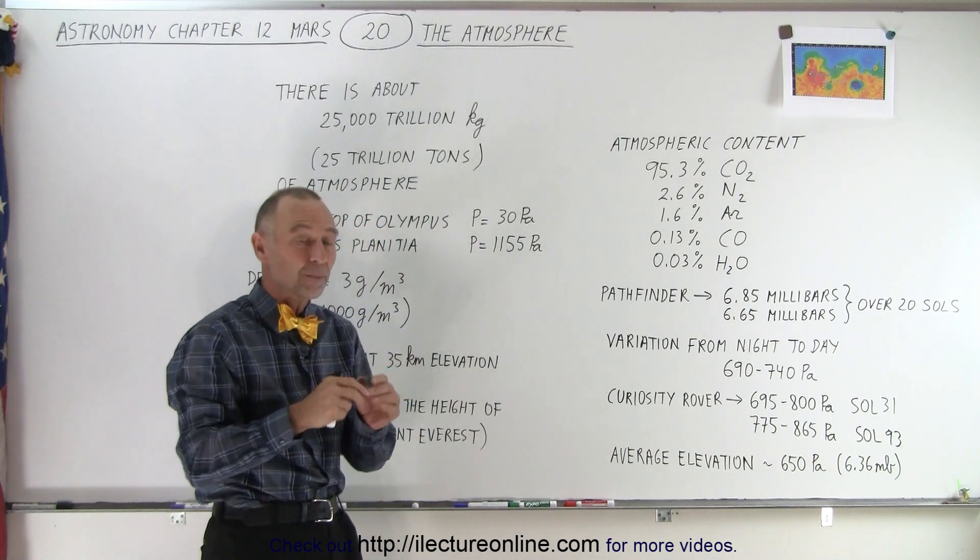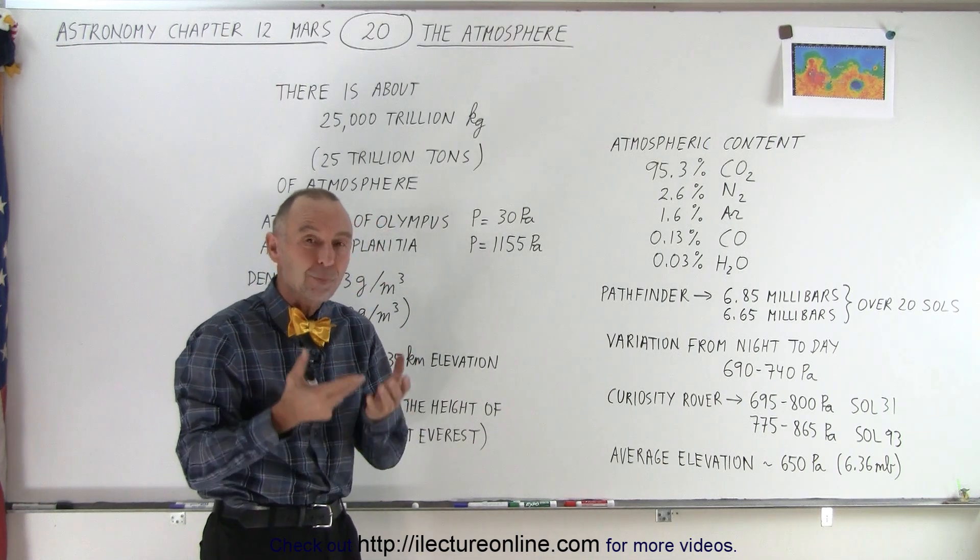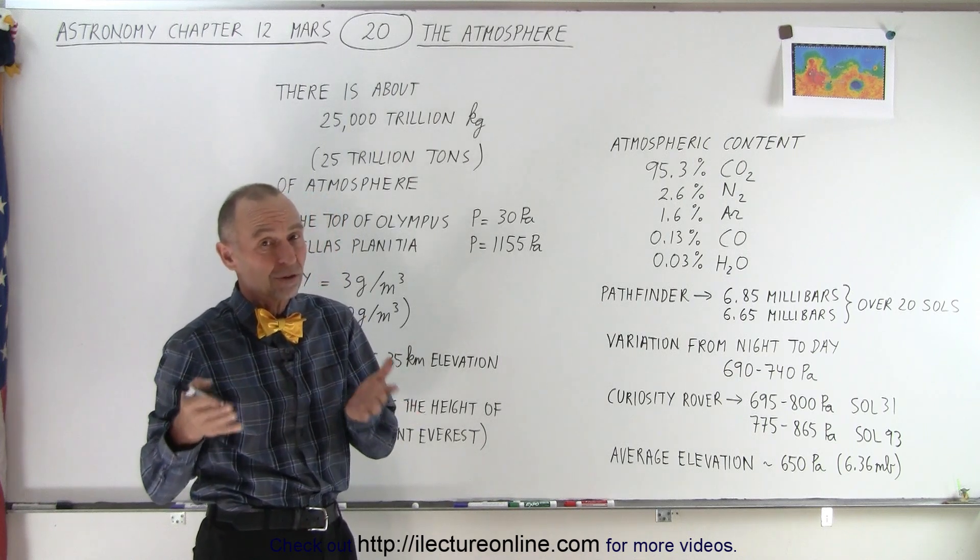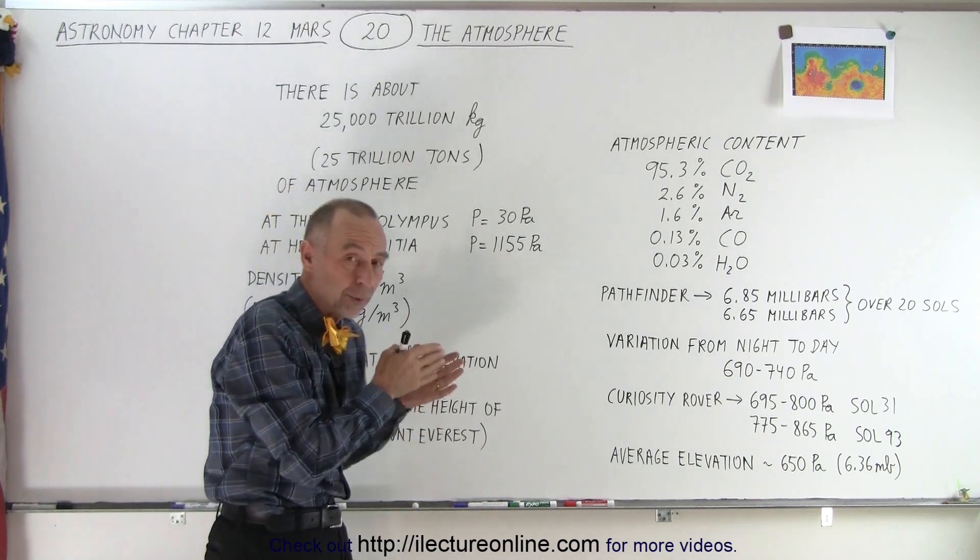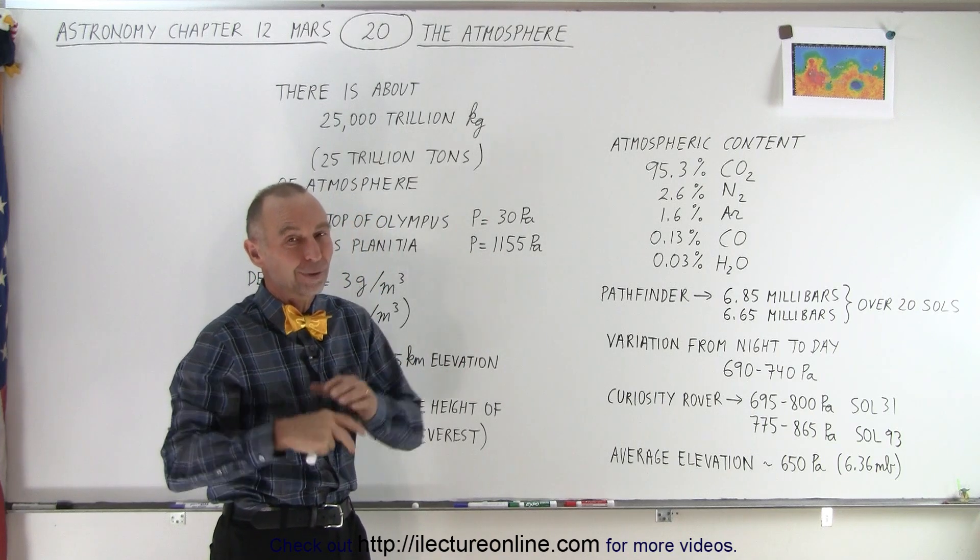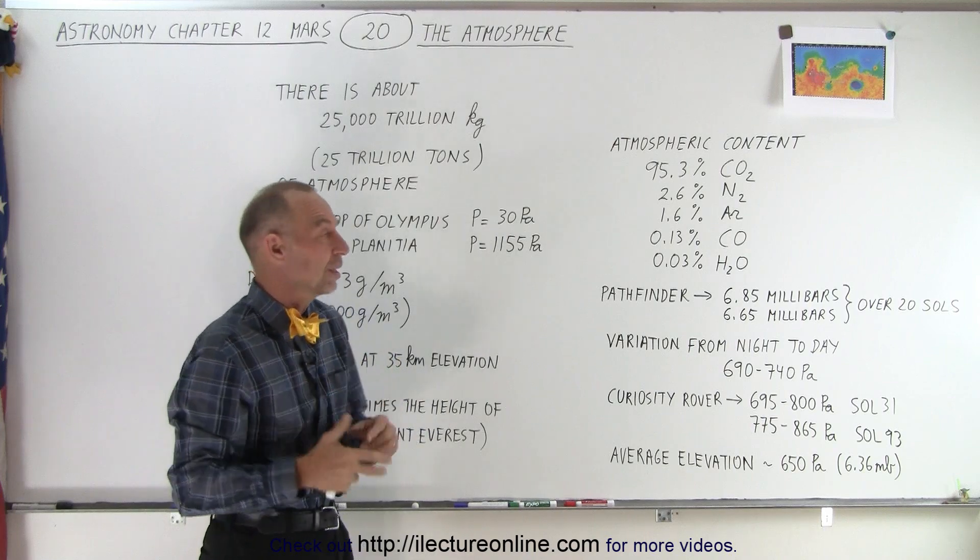The big difference, of course, is that on Venus, the pressure, the atmospheric pressure, is about 90 times the atmospheric pressure on the Earth, where the atmospheric pressure on Mars is less than 1% the atmospheric pressure on the Earth. So in that respect, they're hugely different.